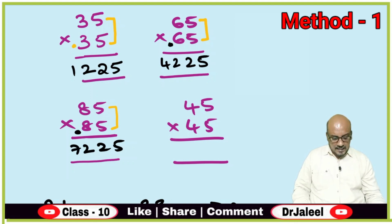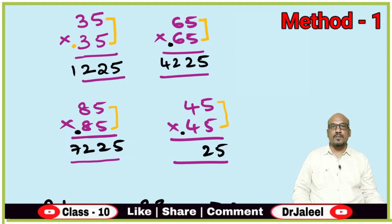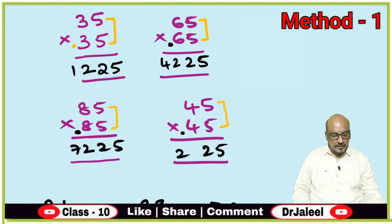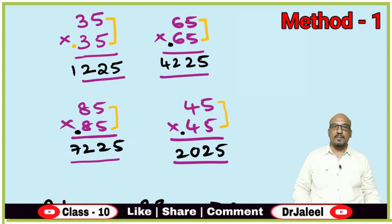Let us go for the last example here. 5 into 5 is 25. Here there is 4; you need to increase it by 1. So 4 plus 1 is 5. 5 × 4 is 20. So the answer is 2025. In this way, you can utilize the first method.